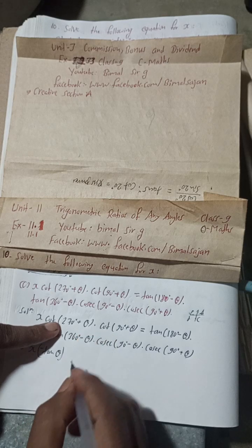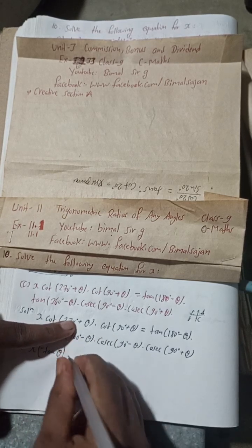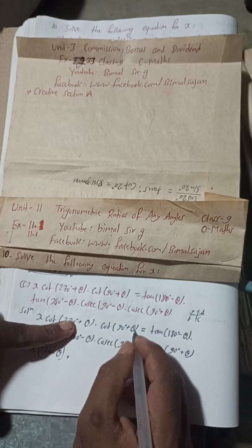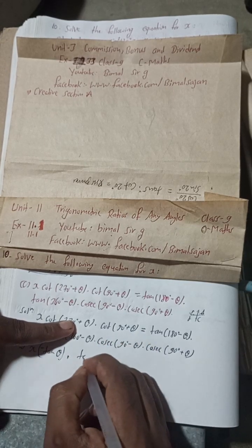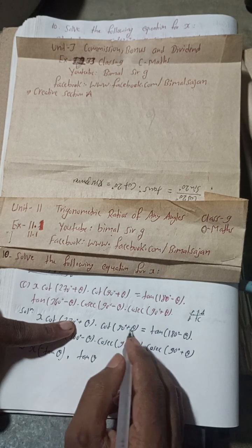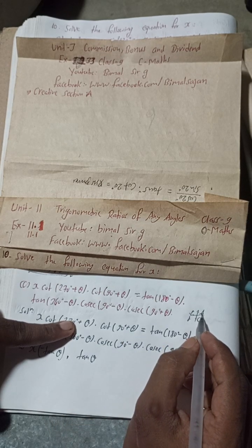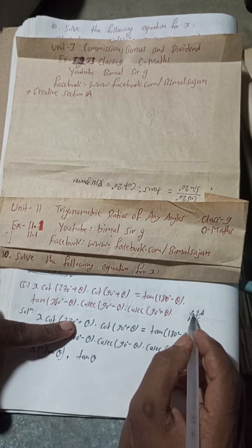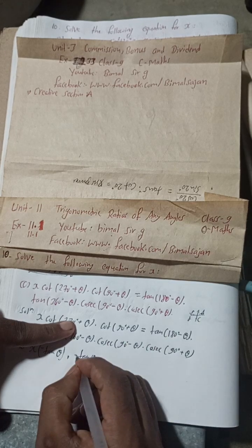For cot(90° + θ), cot becomes tan. Now 90° + θ is in the 2nd quadrant. In the 2nd quadrant, only sine and cosec are positive, so tan is negative. Therefore cot(90° + θ) = −tan θ.